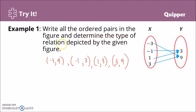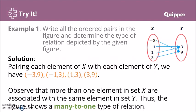Now determine the type of relation depicted by the given figure. What type of relation do we have? Many-to-one type of relation. Many-to-one, because notice we have here three. Three is associated to both one and negative one. And also nine is associated to three and negative three. So we have many-to-one correspondence. Take note that no first elements are being repeated, so this is unique. So this is still a function.